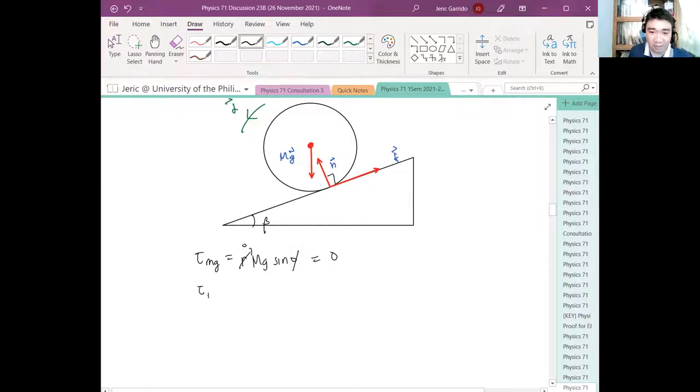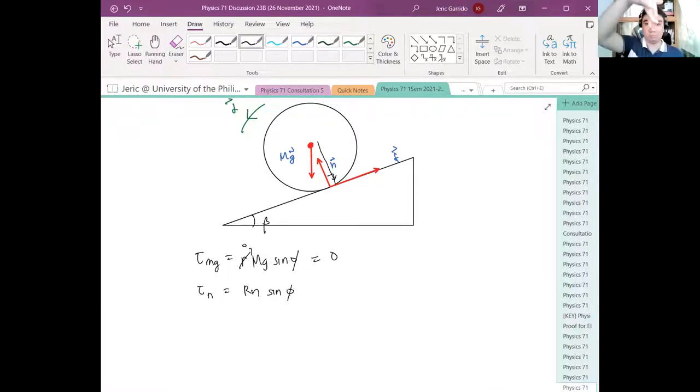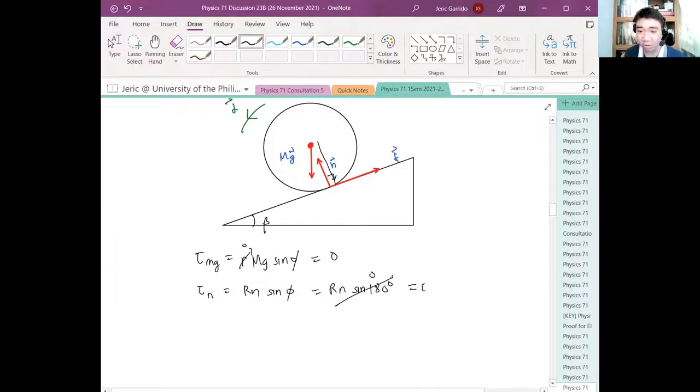On the other hand, what is the torque exerted by the normal force? There's a lever arm from this position to that. This is the lever arm given by R, capital R. So RN, but what is the angle between the lever arm and the force? R and N are antiparallel. Therefore, this is simply RN sine of 180 degrees, and therefore this is also zero.